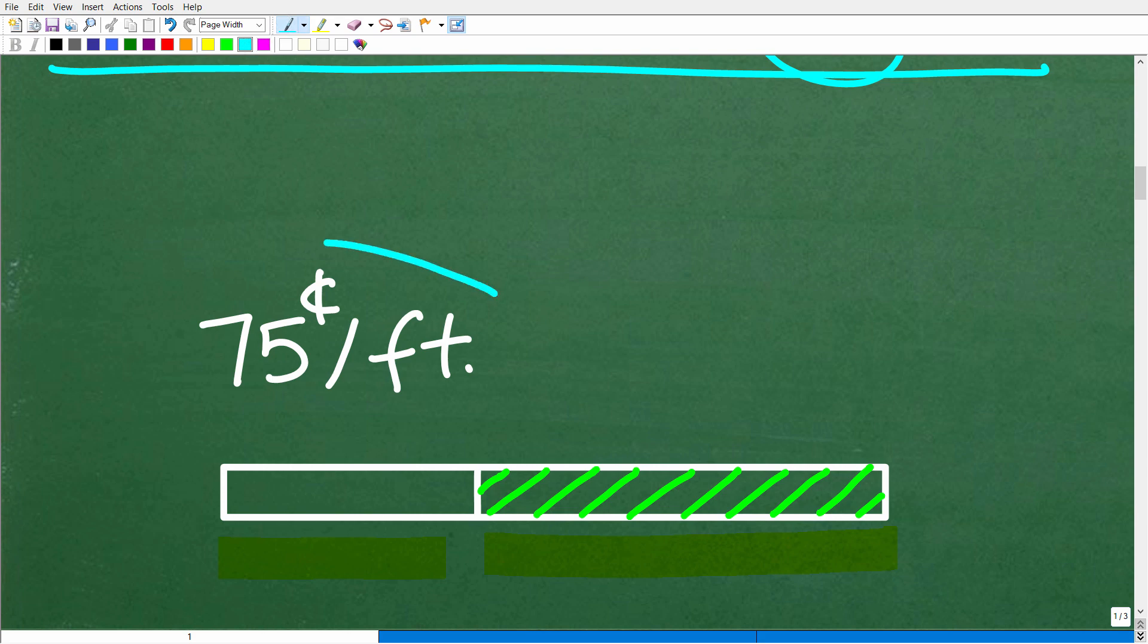Now, I know that the board costs $0.75 per foot. Now, if I know how long this longer piece is, all I have to do is multiply it by $0.75, and then I'll get the total cost of the longer piece in dollars.